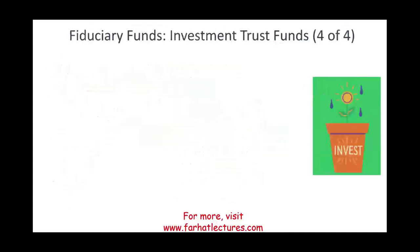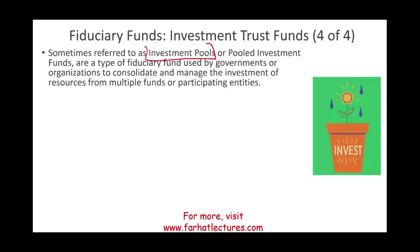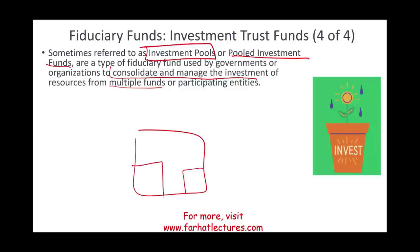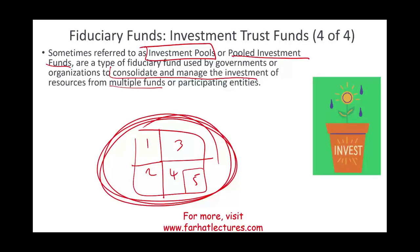The fourth type of fiduciary fund is the investment trust fund, sometimes referred to as investment pools or pooled investment funds. These fiduciary funds are used to consolidate and manage investments from multiple funds or participating entities. For example, you might have a city with many boroughs — say five different boroughs, each being an independent entity. Each borough might have a million, three million, or six million dollars of extra money available to invest.